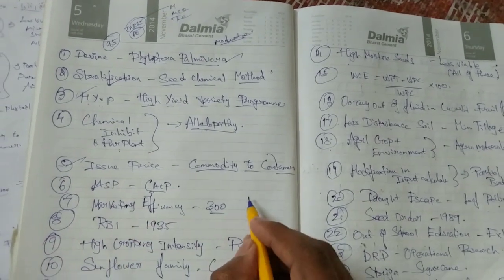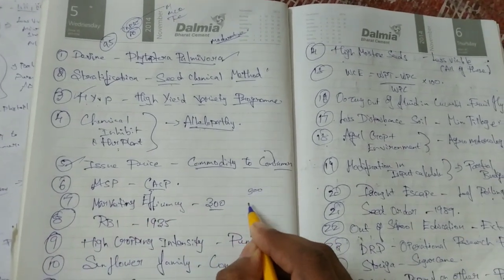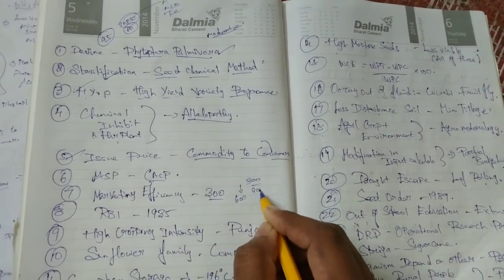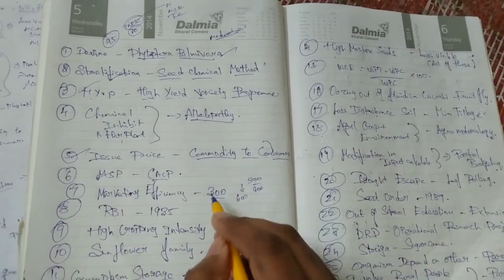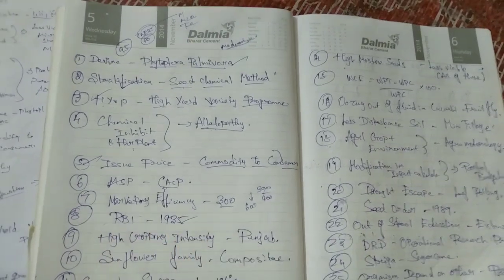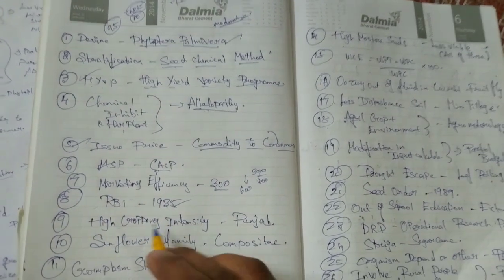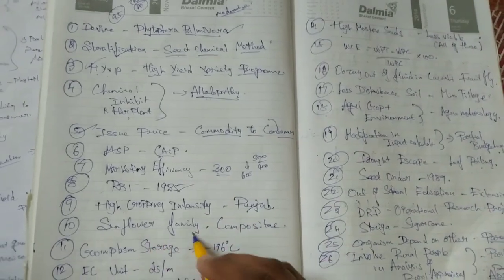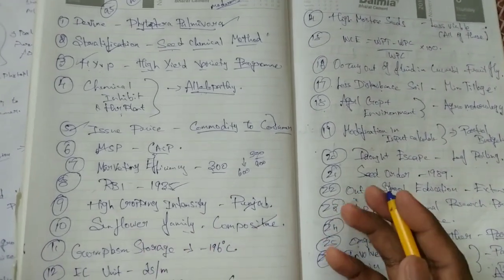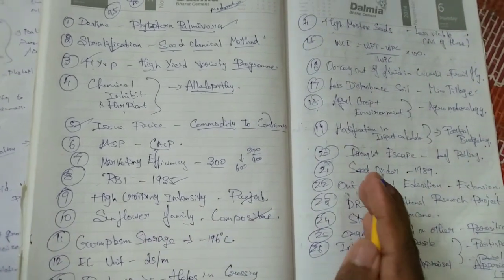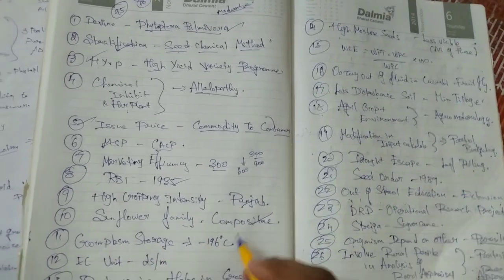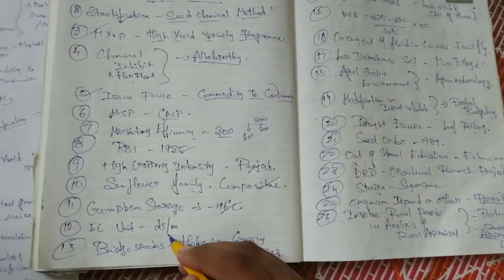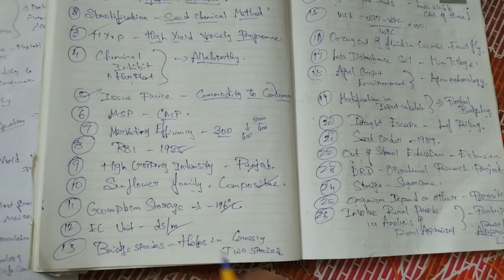It's the marketing efficiency. So this is our test batches and these are the questions. The germ class storage is minus 196 degrees Celsius. EC unit is minus decisiemen per meter.